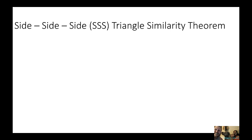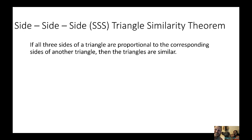Now the next theorem: Side-Side-Side Triangle Similarity Theorem. Now I know what you're thinking. Is this like the same as side-side-side congruency theorem? Not quite, because now we're talking about similarity. So instead of talking about congruency of every side, we're talking about proportionality. So the definition of similarity kicks in again. So if all three sides of a triangle are proportional to the corresponding sides of another triangle, then the triangles are similar.